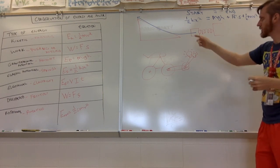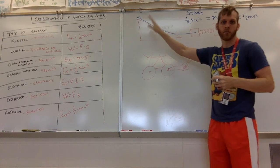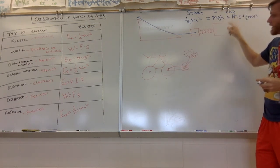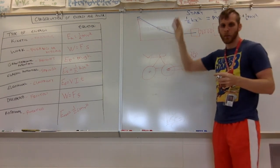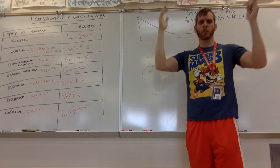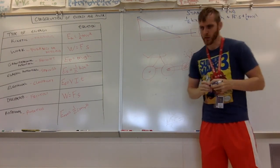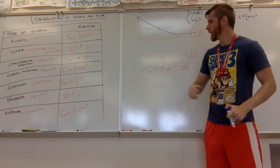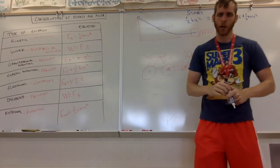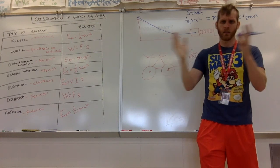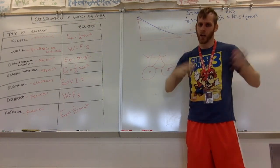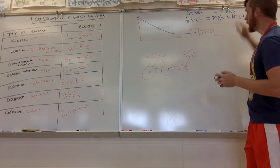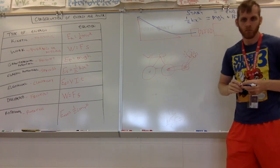From this equation we can solve for many things: how high up the ramp the block goes, what coefficient of friction is needed to stop it, how fast it's moving at the top, what elastic constant the spring needs, or how far to compress the spring — depending on what information is given, we just plug in and solve for the unknown.